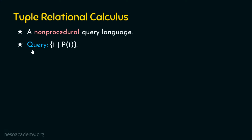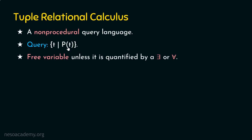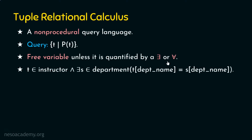The query in tuple relational calculus looks like: the set of all tuples t such that the predicate is true for that tuple t. It's important to know about free variables and bound variables. A variable is called a free variable unless it is quantified by an existential or universal quantifier. The existential quantifier means 'there exists an x such that'; the universal quantifier means 'for every x' or 'for all x'.